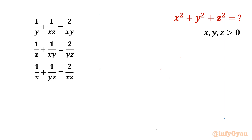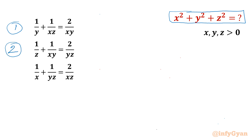Welcome back to Infigyan, my dear friends. In today's video, we have one very interesting and challenging question from system of equations. We have to evaluate x squared plus y squared plus z squared, given the system: 1/y + 1/xz = 2/xy (equation 1), 1/z + 1/xy = 2/yz (equation 2), 1/x + 1/yz = 2/xz (equation 3), with xyz positive.